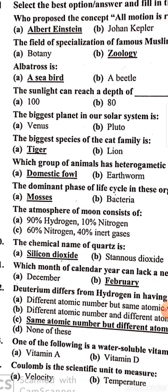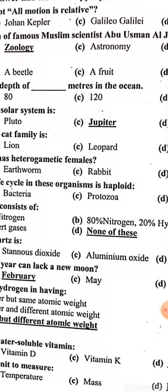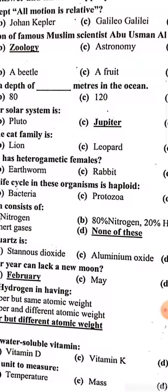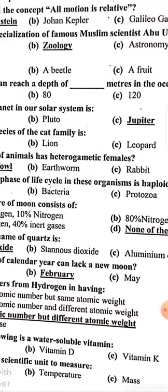Which group of animals has heterogametic? It is domestic fowl. The dominant phase of the life cycle in these organisms is haploid. Moses — the atmosphere of the moon consists of none of these.